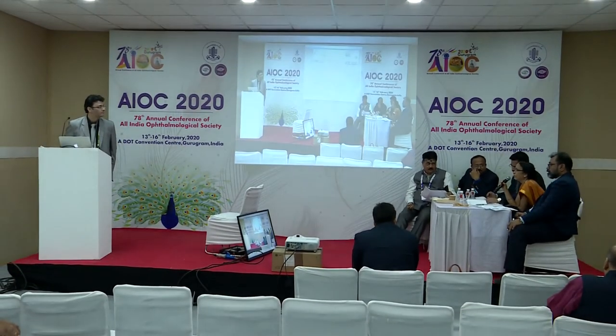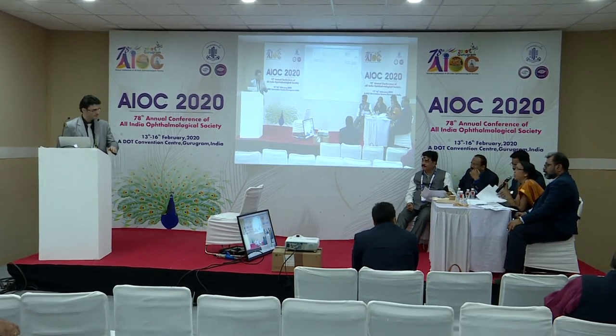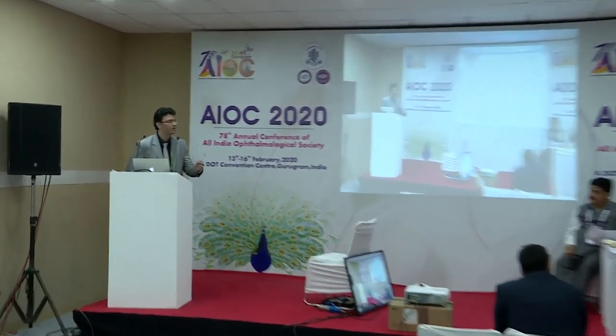During Q&A, a question was raised about whether the presenter was heading toward recommending refractive lens exchange for patients with 6/6 vision. The presenter clarified that the i-Trace separates corneal and lenticular aberrations, and the dysfunctional lens index helps identify whether aberrations originate from the cornea or the lens. They noted that patients with frequent spectacle changes who are symptomatic are the key target group. A 40% improvement in quality of life was observed post-operatively in patients who had glare and halo despite normal crystalline lens.